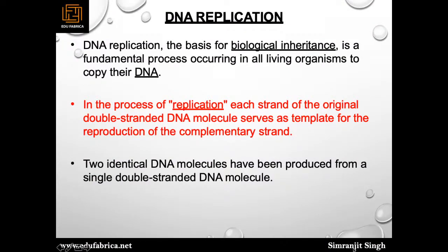DNA replication is semi-conservative in nature, which has been discovered by scientists using the N15 and N14 experiment — the Meselson-Stahl experiment — using different isotopes of nitrogen to identify that whenever replication is happening, 50% of your data is being transferred to the offspring, half-half. This is basically a biological inheritance, a fundamental process occurring in all living organisms to copy their DNA, where each strand in the parent DNA serves as a template to reproduce two semi-conservative complementary strands.